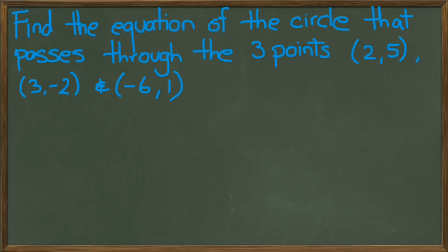So we want to find the equation of the circle that passes through the three points (2, 5), (3, -2), and (-6, 1).